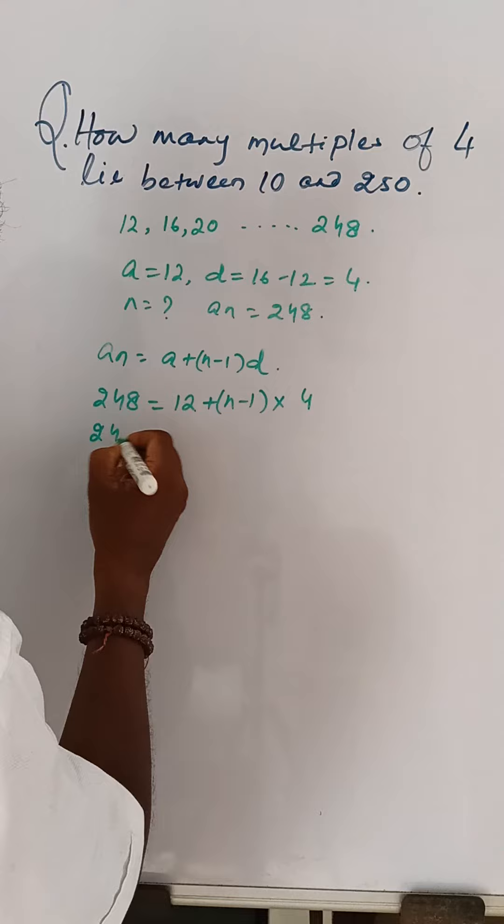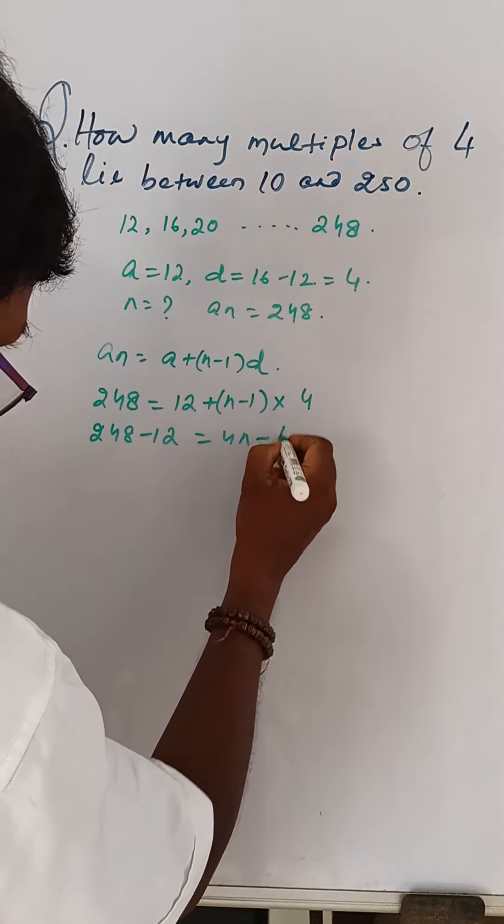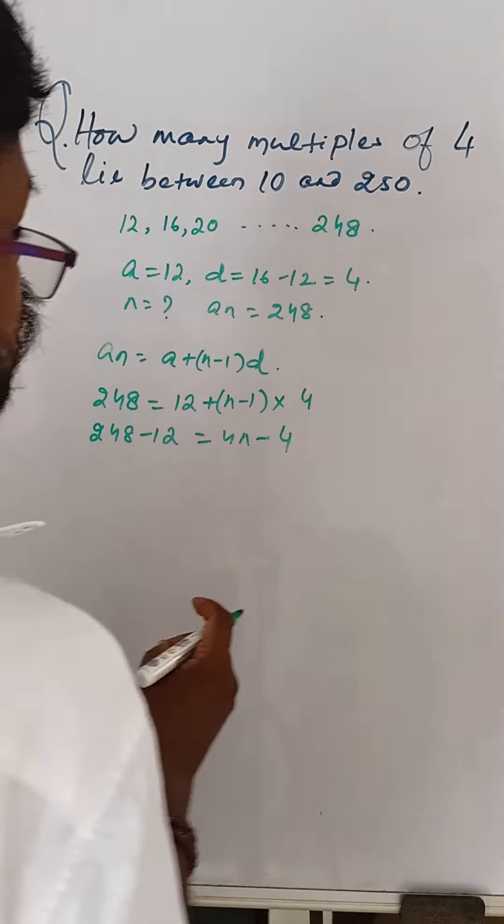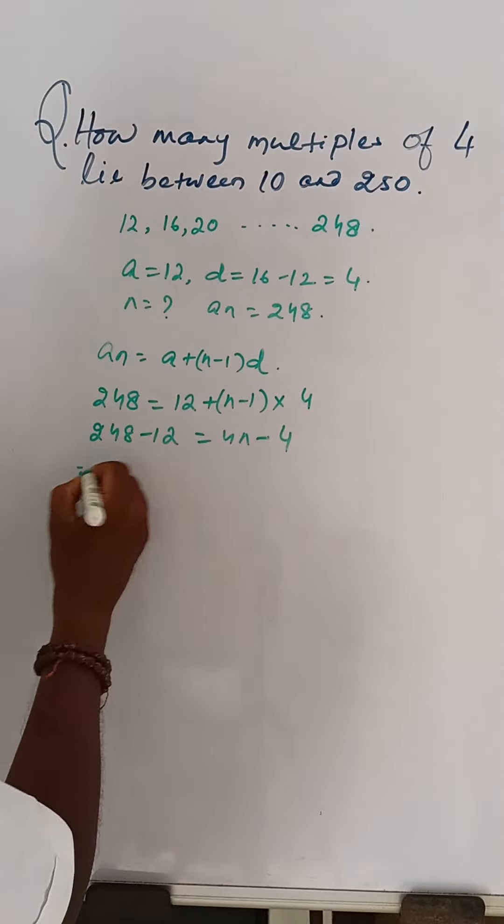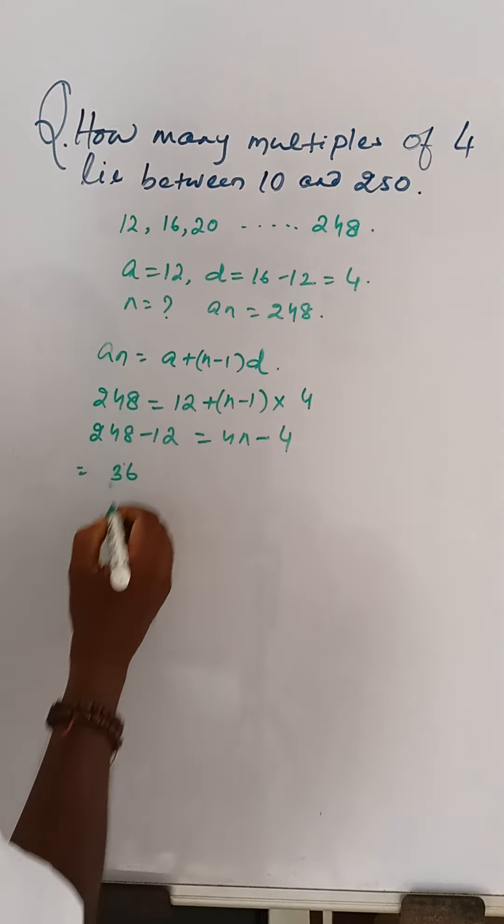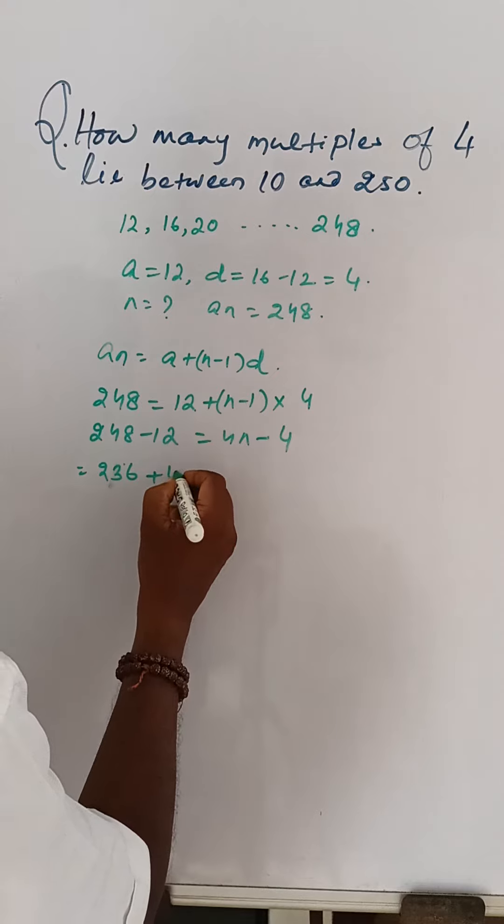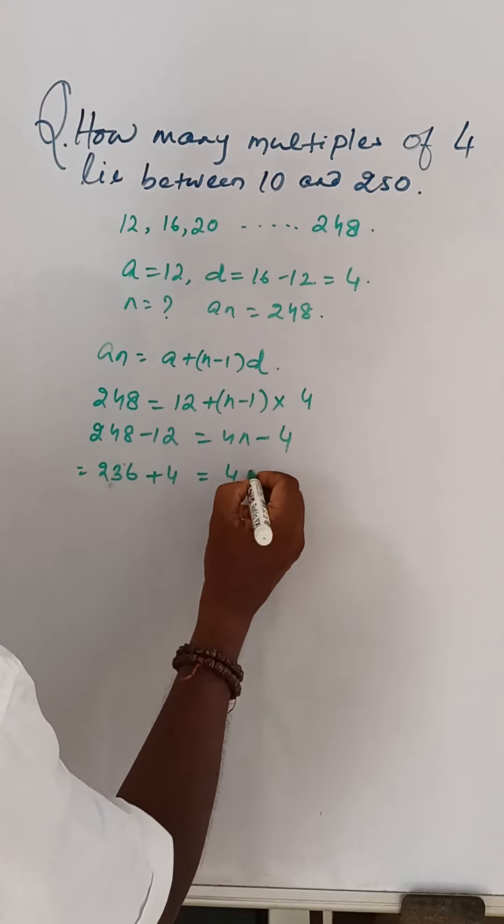Then, 248 minus 12 is equal to 4N minus 4. So, 236 plus 4 is equal to 4N.